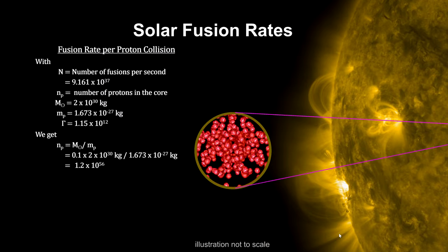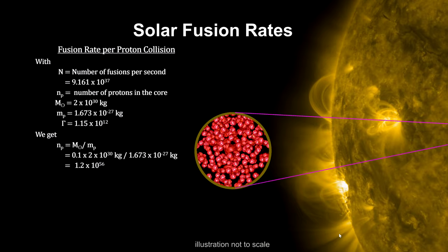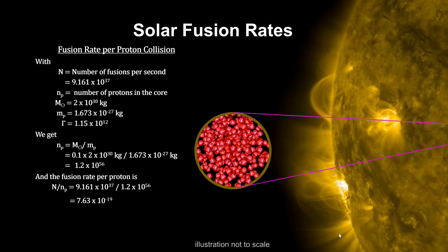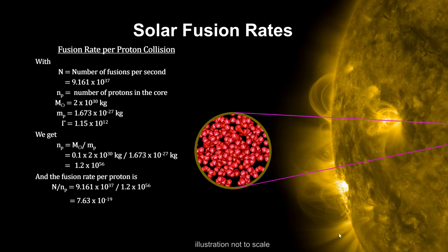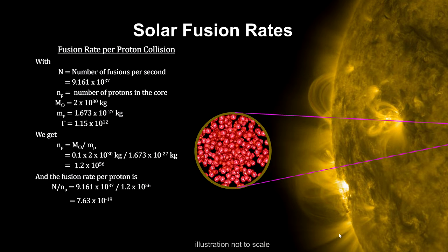We can also calculate the Sun's fusion rate per proton. Dividing the mass of the Sun's core by the mass of a proton gives us the number of protons in the core. Dividing the fusion rate calculated earlier by the number of protons in the core gives us the fusion rate per proton.